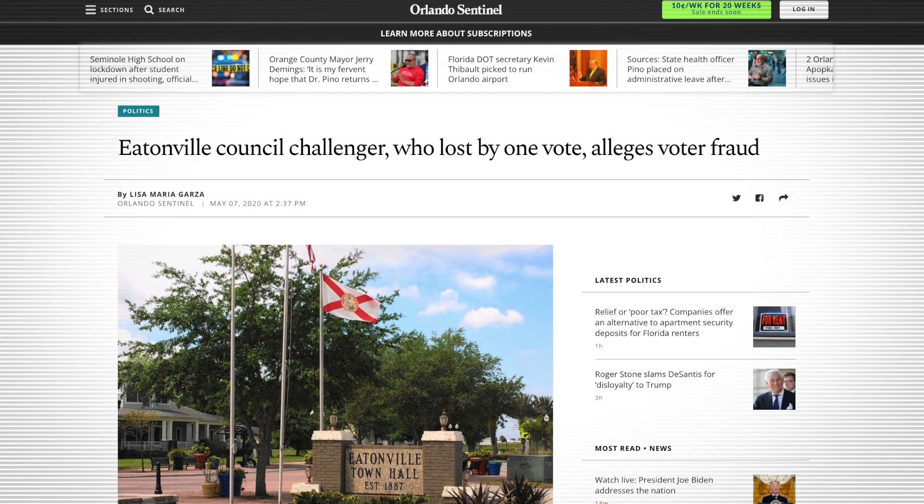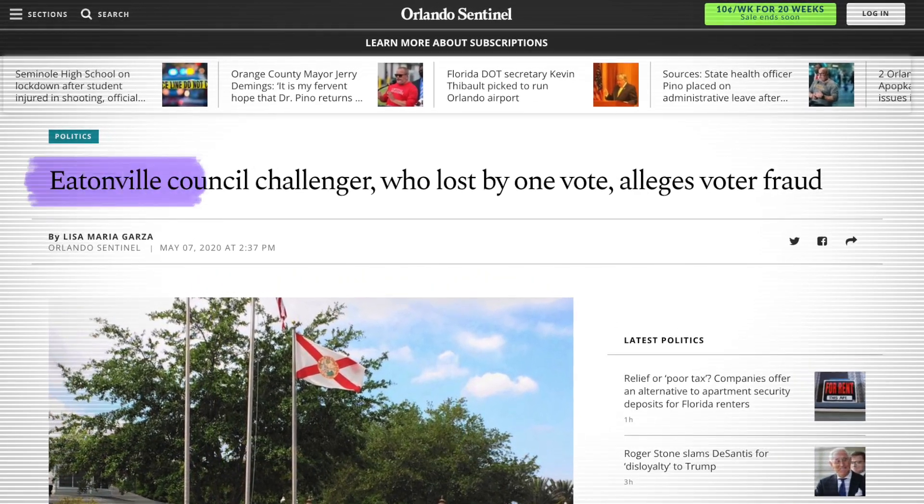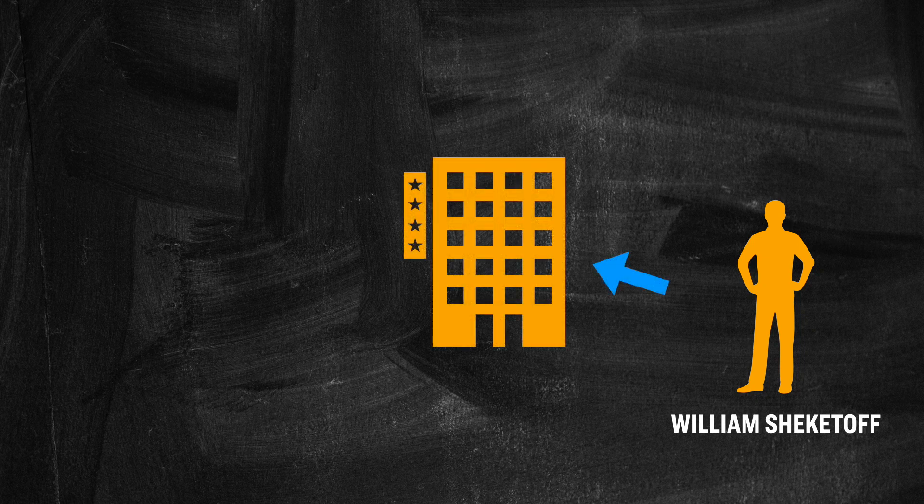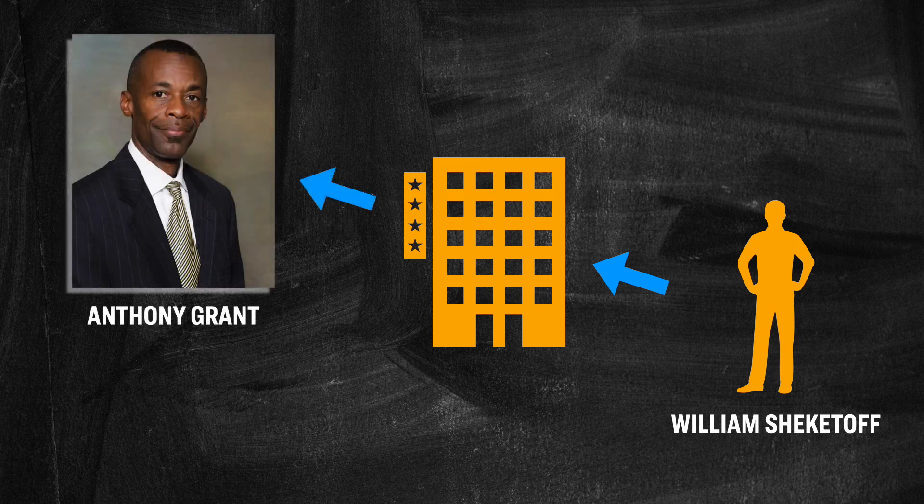According to the court records, what happened during that recount was that two previously uncounted votes were suddenly discovered. Both of those new ballots were for the incumbent, Mr. Mack, and therefore he was suddenly announced as being the winner by a single vote. However, Mr. Daniels filed a lawsuit the next month in April of 2020, where he contested the election and he named both Mr. Mack as well as the Orange County canvassing board as the defendants. And earlier this month, after 19 full months of back and forth, the Orange County court held the trial wherein several witnesses were called to testify. One of the witnesses was a man named William Sheketoff.